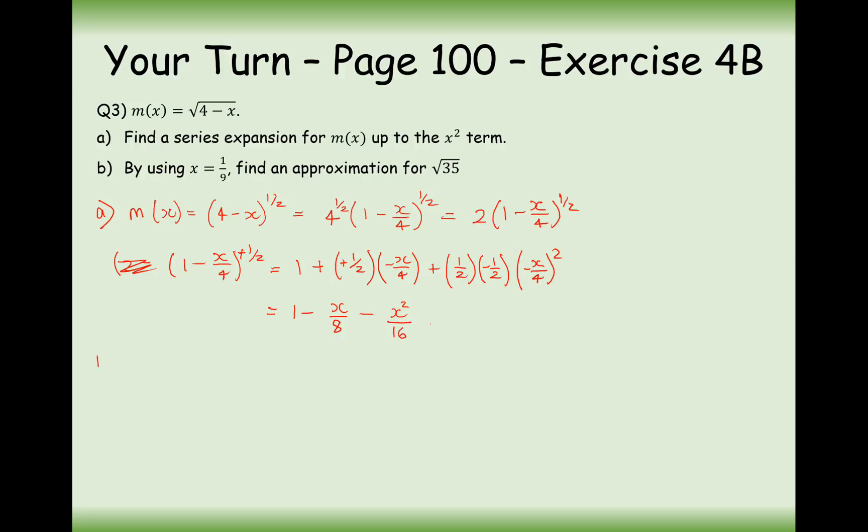We've lost one step here. We now need to double everything, because that is what our binomial expansion is. So m of x now is equal to 2 minus x over 4 minus x squared over 8. That is the final answer.